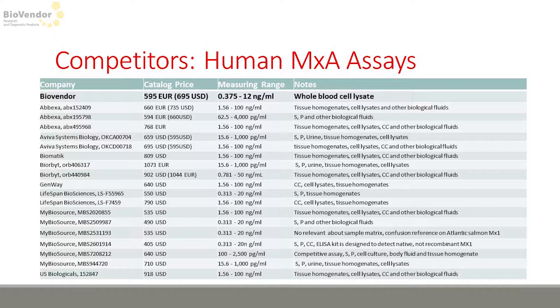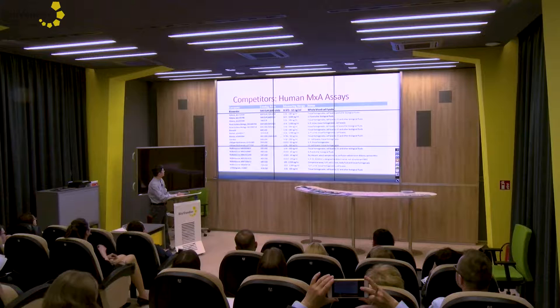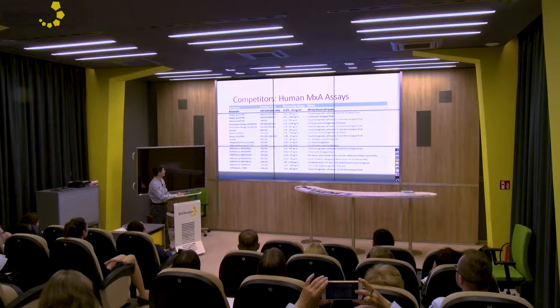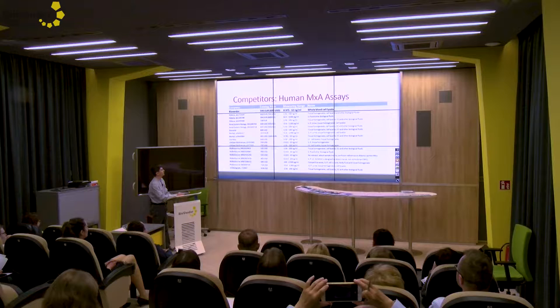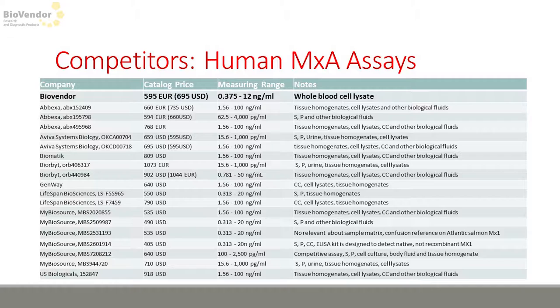Now I will review our competitors. On websites like BioCompare, you can find about 55 different MXA assays on the market. A typical example is MyBioSource, which offers six or seven different assays at different prices, different measuring ranges, and with different applications. The same assay is also offered by Lifespan, GeneWay, Biomatic, Aviva, and Abexa. At the end, there are only two or three actual producers of the assays, so the competition is not so strong.